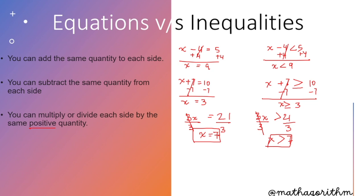For division: if x divided by 4 equals 5, or x divided by 4 is less than or equal to 5, multiply both sides by 4. In the equation, x equals 20. In the inequality, x is less than or equal to 20.